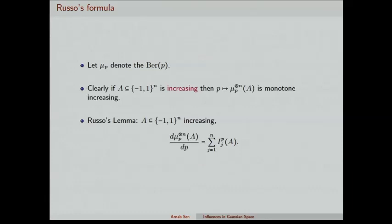Now let's talk about Russo's lemma. Suppose we have a monotone set — monotone in each coordinate — and suppose you measure the set with respect to the product Bernoulli-p measure. If p increases, the measure of the set increases. Russo's lemma tells you that the derivative of the measure of the set with respect to p is exactly equal to the sum of the influences, where the influences are taken with respect to the product measure p.